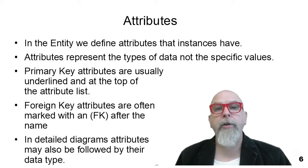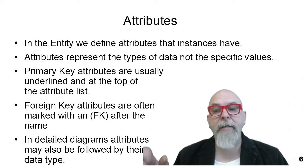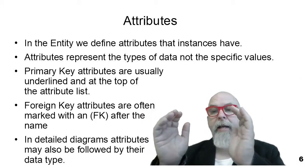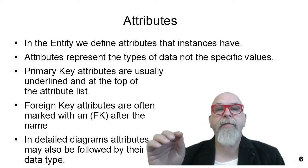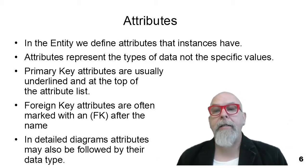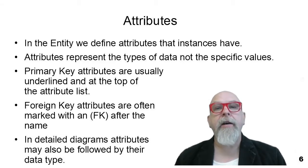Foreign key attributes are used to connect two tables together. It's the primary key of one table that becomes the foreign key on another table, and that's how relationships are actually created and implemented. Because there isn't a way to underline or mark them, what we usually do is put an open parenthesis and the letters FK beside the name of the attribute, so we know that it's a foreign key to some other table. In detail, entity relationship diagrams will also define the data type of the attribute — whether it's text, an integer, a decimal number, a blob, and so on.